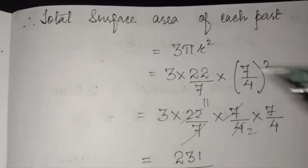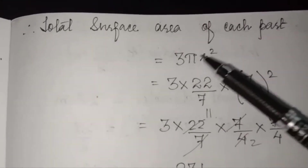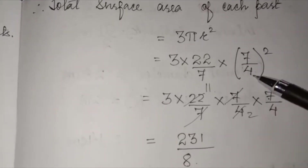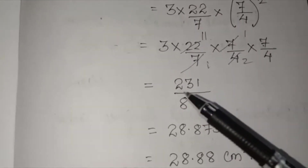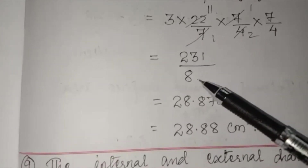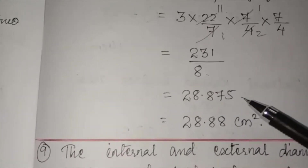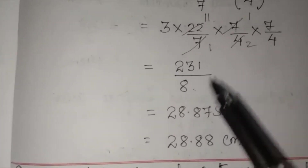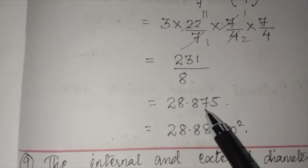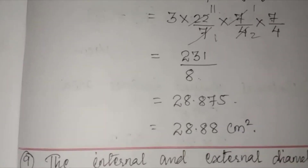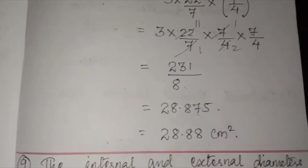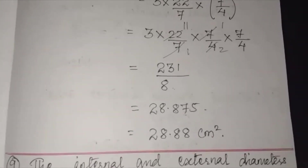The formula for total surface area of a hemisphere is 3πr². Substituting r = 7/4: 3 × 22/7 × 7/4 × 7/4. Multiplying gives 231/8 = 28.875 cm². Correct to two decimal places, since the third decimal is 5 we round up: 28.88 cm².